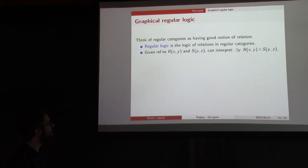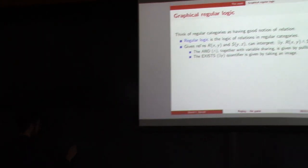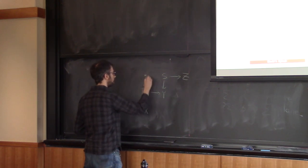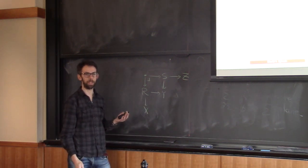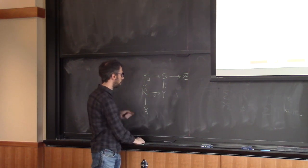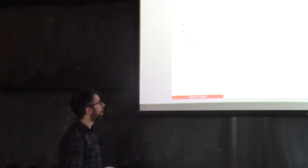The point of all this stuff is that regular categories have enough structure to do regular logic. If we think of regular categories as having a good notion of relation, then regular logic, how is it the internal language, or internal logic of regular categories? It is in the sense that it is the logic of relations. So if you have relations R of xy, it's a relation of two variables and S of yz, you can interpret what it means that there exists a y where x is related to y by r, and y is related to z by s. The and here, together with the kind of variable sharing of the two y's, is given by a pullback. And the exists is given by the image.